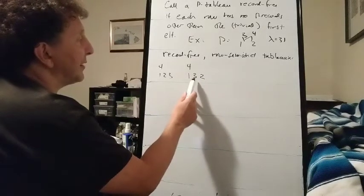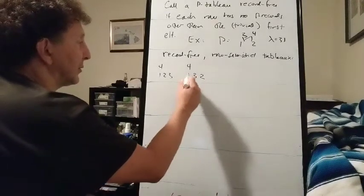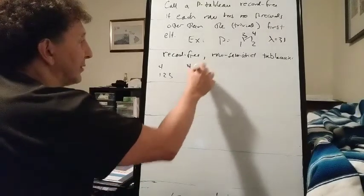Now, 3 is greater than everything we've seen so far. 3 is a record. So 1 is a record, 3 is a record, so that doesn't count as record-free.